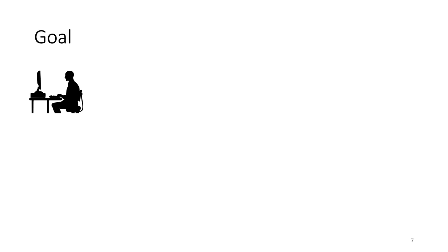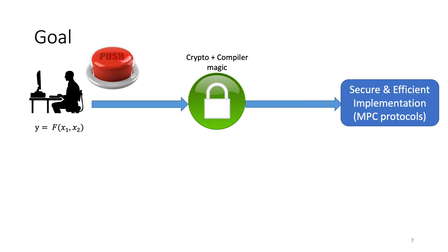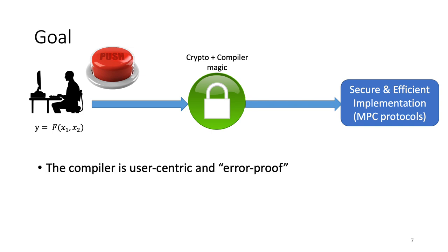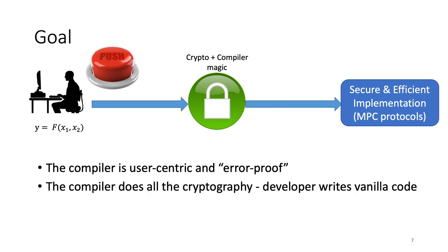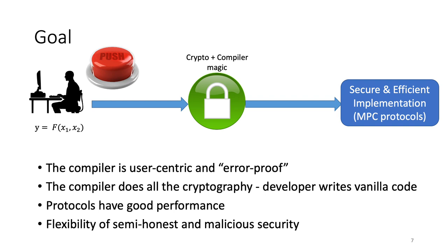With these issues in mind, we set out with the following goal: a developer interested in an MPC protocol implementation for function F should only have to represent F in the most natural framework and then push a button to get a secure and efficient MPC protocol implementation. For machine learning applications, one of the most natural frameworks is TensorFlow, which we consider in this work. We also want the compiler to be user-centric and error-proof, hide all cryptographic details from the developer, produce protocols with good performance, and support both semi-honest and malicious security models.